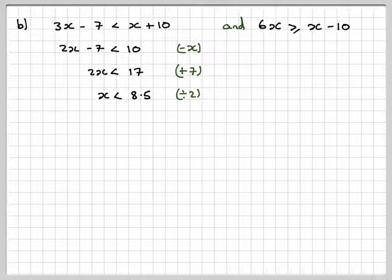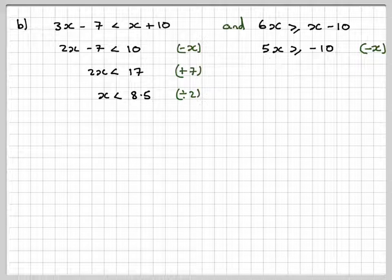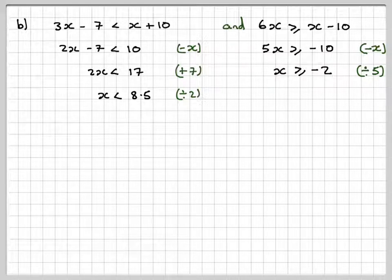For the other one, taking away x, we get 5x is greater than or equal to minus 10. Divide by positive 5, so nothing happens with the inequality sign. You get x is greater than or equal to minus 2.